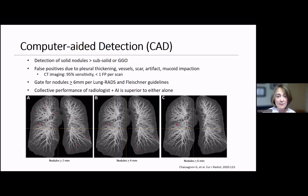Sensitivity for detection of clinically relevant nodules can be increased by gating for size. The use of AI can significantly reduce image review times, leading to more efficient radiology workflows. Several studies have demonstrated that review by a radiologist using AI as a second reader is superior at detecting clinically relevant nodules compared to either modality used alone.